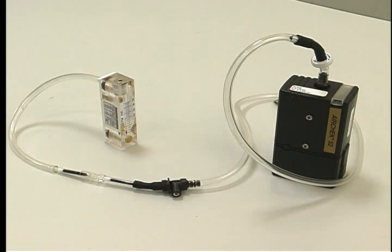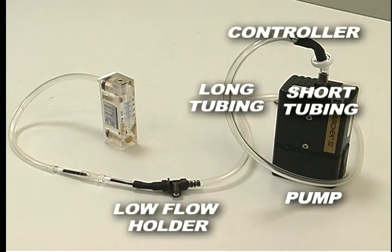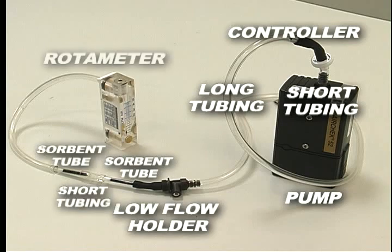The order of the components for calibration is pump, short length of tubing, constant pressure controller, long length of tubing, adjustable low flow holder, sorbent tube, short tubing, sorbent tube, and rotometer.